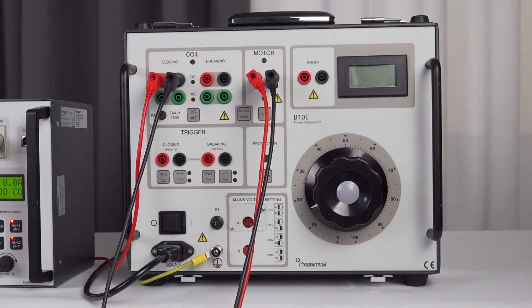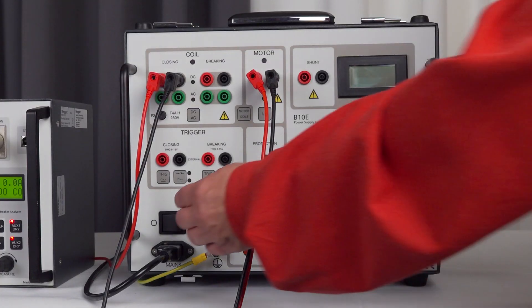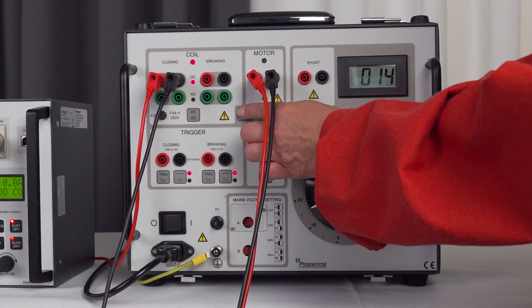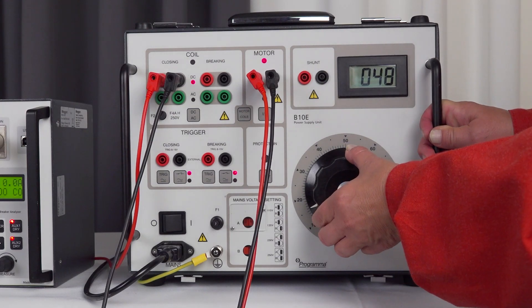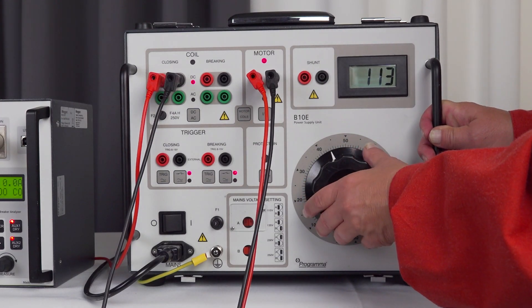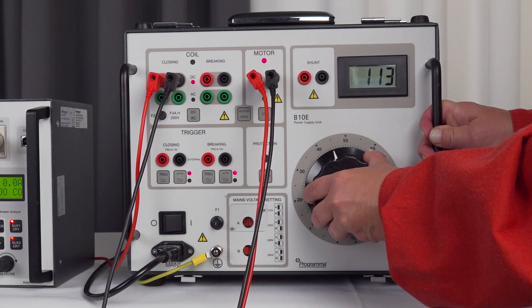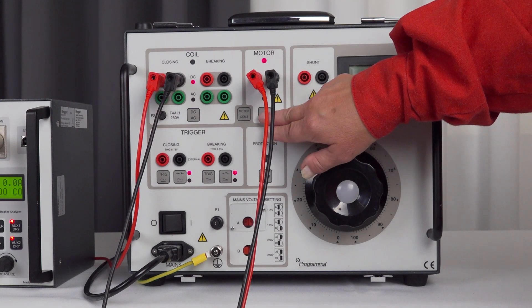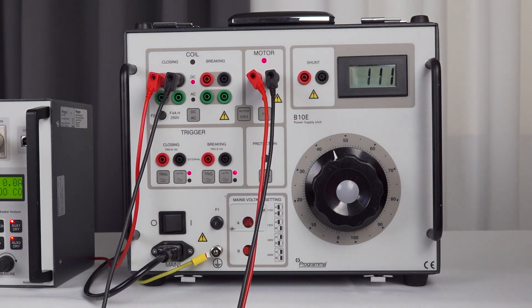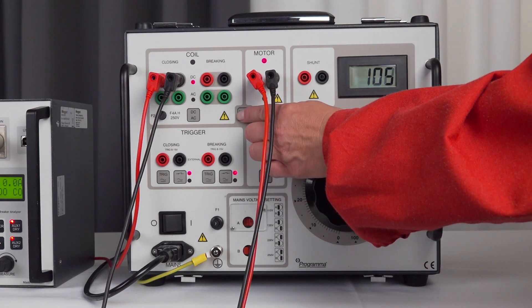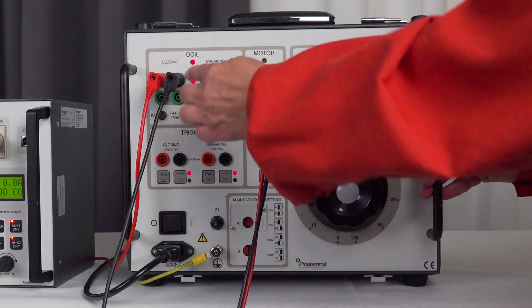I have one more preparation to do. I need to charge the motor. I use B10E. I put it to motor and I set it to the voltage I need. And it's going to be a little noise. After that, I put it to coil again.